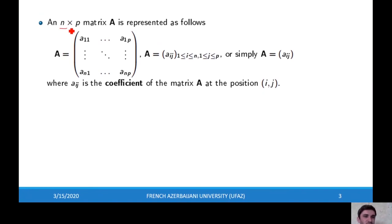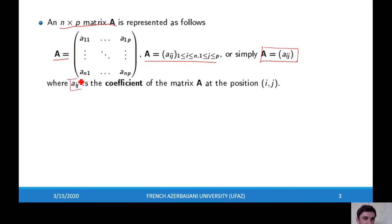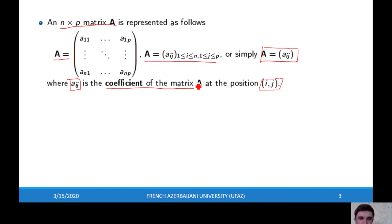An n times p matrix is represented using standard notations. In general we will use one particular notation. Here, A_ij is called the coefficient of the matrix, and i and j show the position of the element.